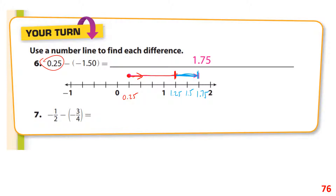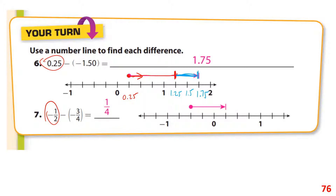On number seven, we start at negative one-half and move to the right three-fourths of a space. Counting one-fourth, two-fourths, three-fourths to the right from negative one-half lands us at one-fourth on the number line.